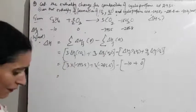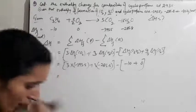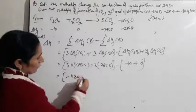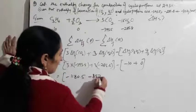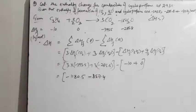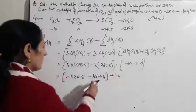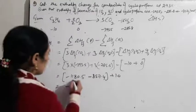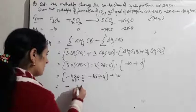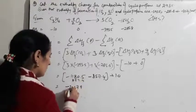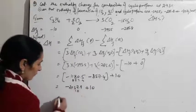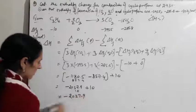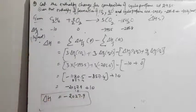Delta H = [3×(−393.5) + 3×(−285.8)] − [−10 + 0]. Calculating: 3×(−393.5) = −1180.5; 3×(−285.8) = −857.4; sum = −2037.9. Minus (−10) becomes +10: delta H = −2037.9 + 10 = −2027.9 kJ/mol.